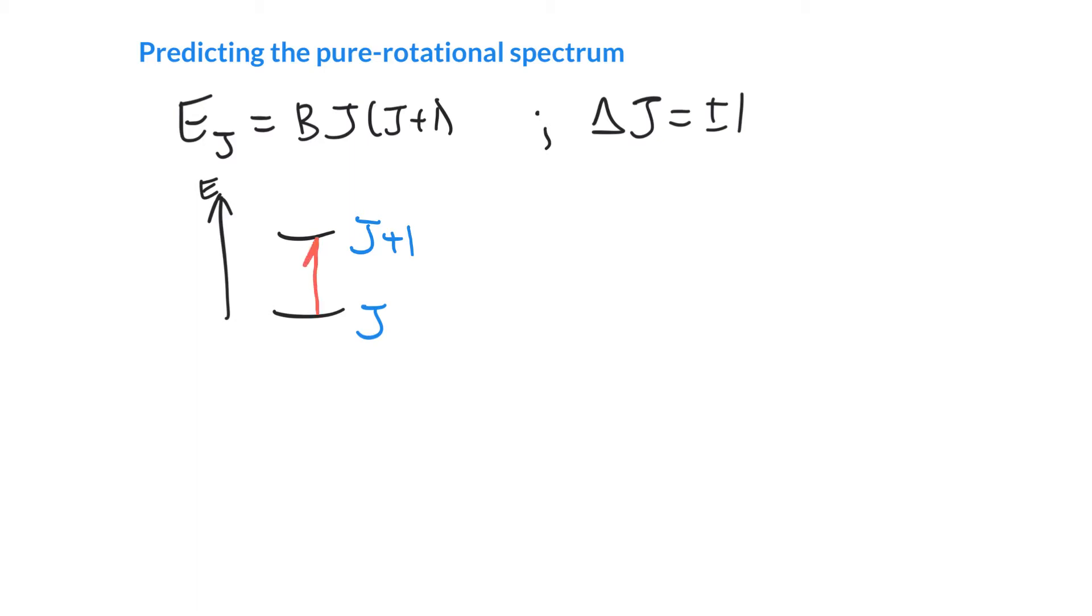For an absorption experiment, we're going to jump from the lower level to the higher level when we supply an energy of a photon that exactly matches that energy gap. So delta E is the energy of the photon, hν, equal to the energy of the upper level (J+1) minus the energy of the lower level J. That is ν_absorption. So hν_absorption equals E_(J+1), which is B times (J+1)(J+2), minus E_J, which is BJ(J+1).